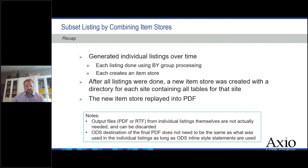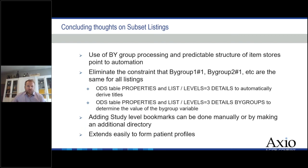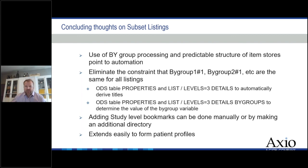Concluding thoughts: using by-group processing in these site listings, we get a very predictable structure to these mysterious item stores. Since they're predictable, automation is a natural extension. We can eliminate constraints like site one equals by-group one by getting information using ODS table properties associated with PROC DOCUMENT — calling it twice to get things like the paths of individual tables and the value of the by variable. With those, you can create SAS data sets, use those to create macros, and automation is straightforward.